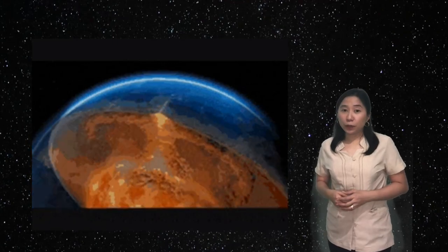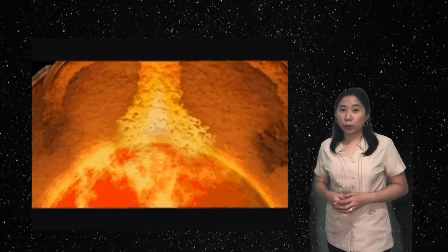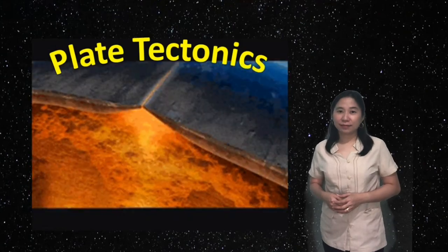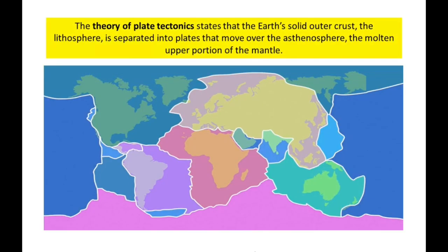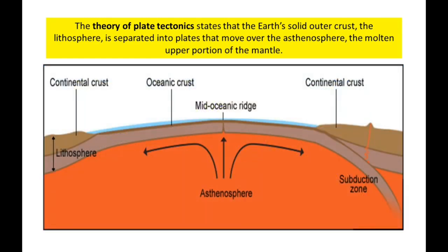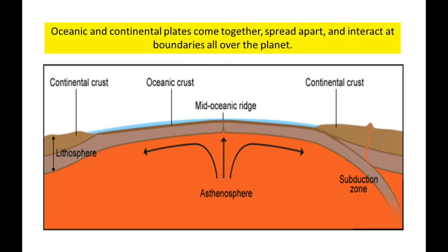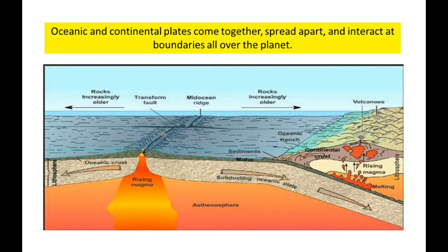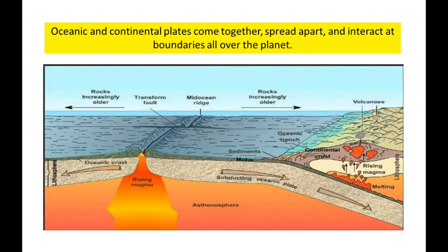The material in the Earth's crust are constantly in motion, and we call this movement plate tectonics. The theory of plate tectonics states that the Earth's solid outer crust, the lithosphere, is separated into plates that move over the asthenosphere, the molten upper portion of the mantle. Oceanic and continental plates come together, spread apart, and interact at boundaries all over the planet.